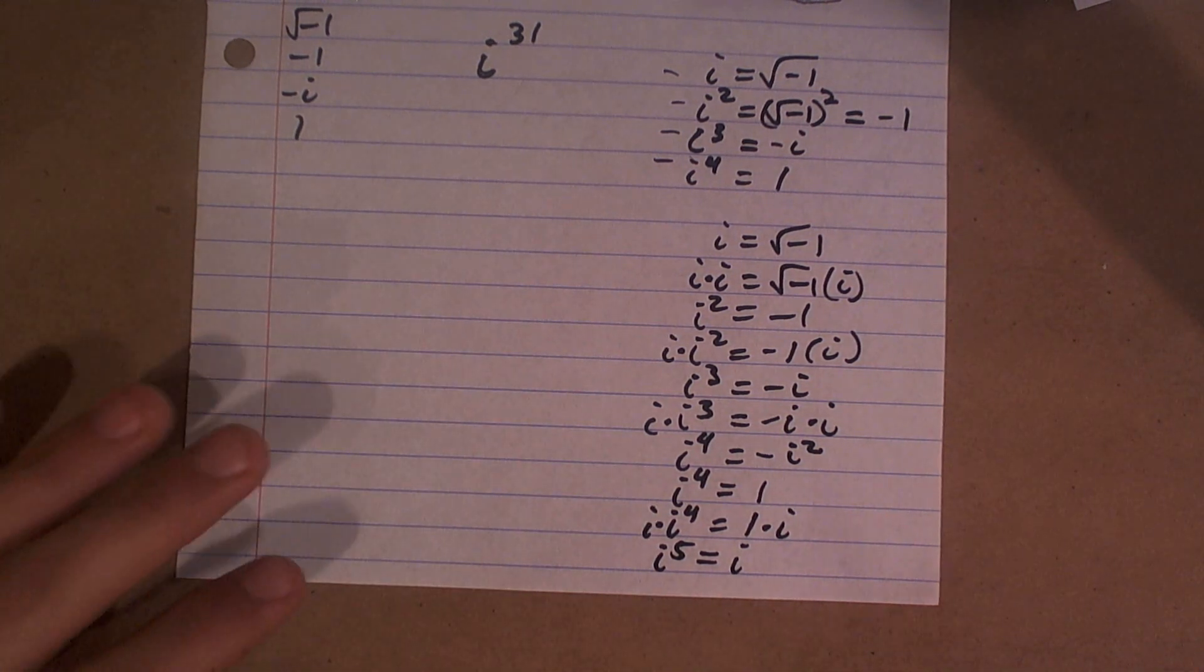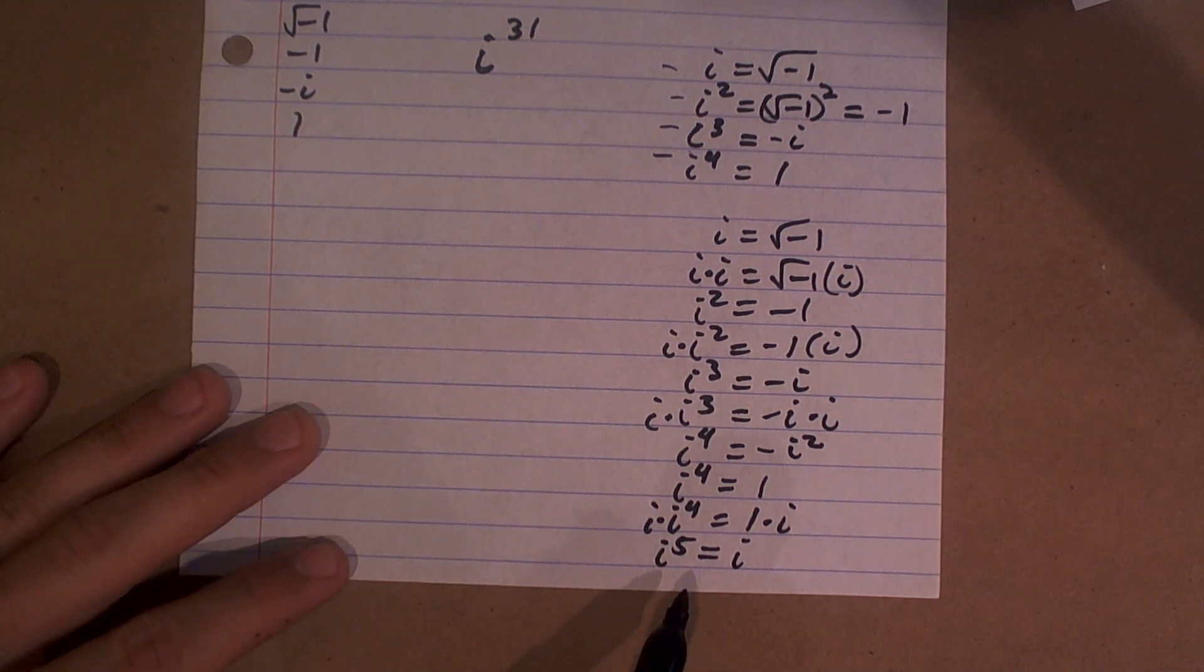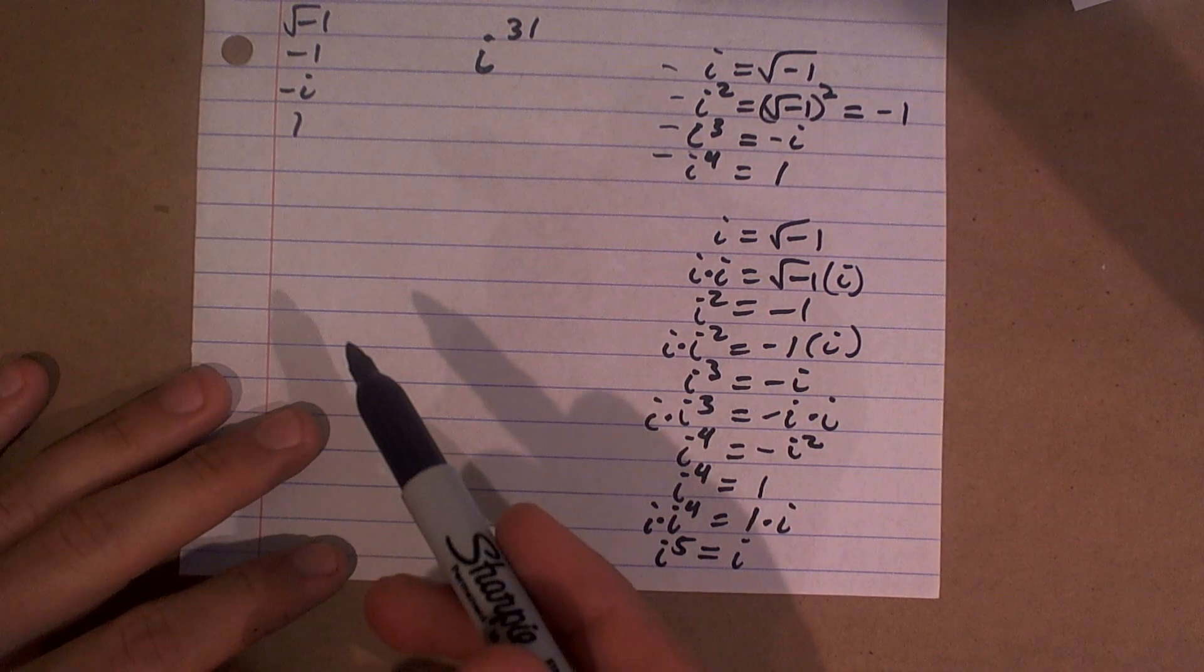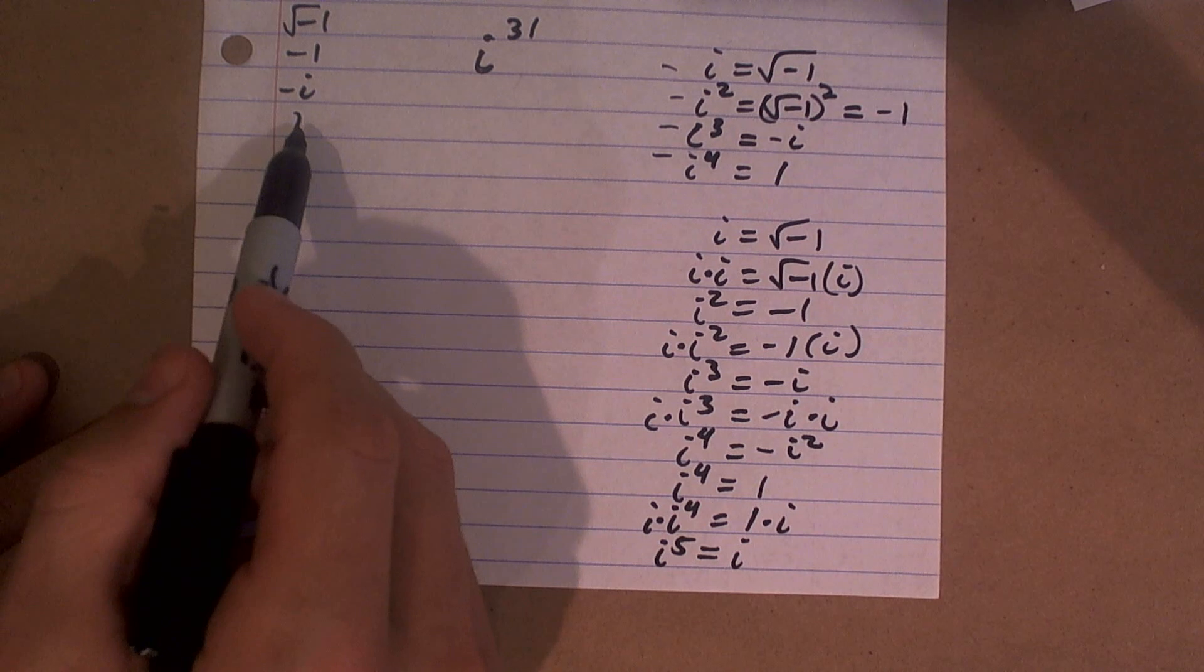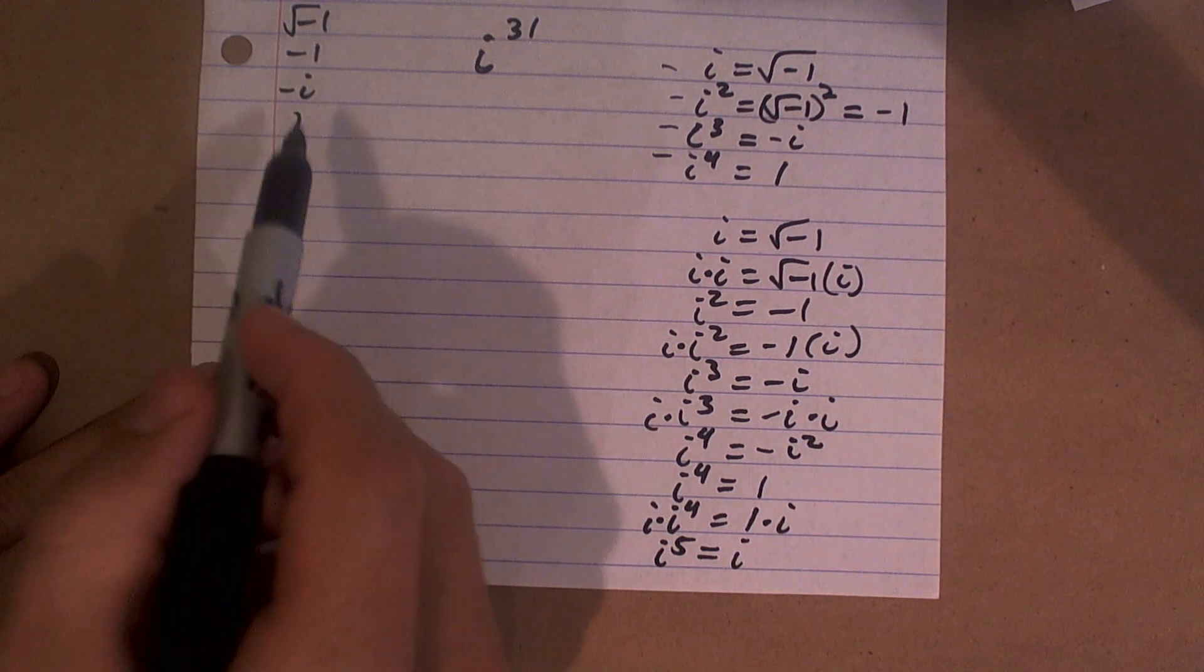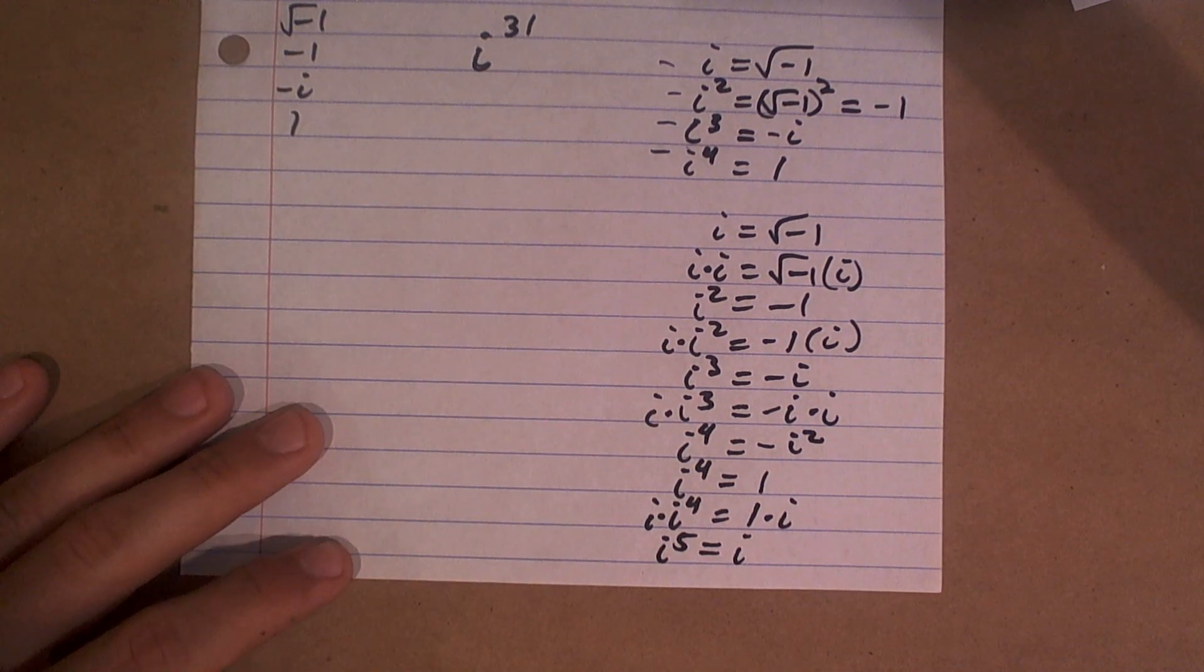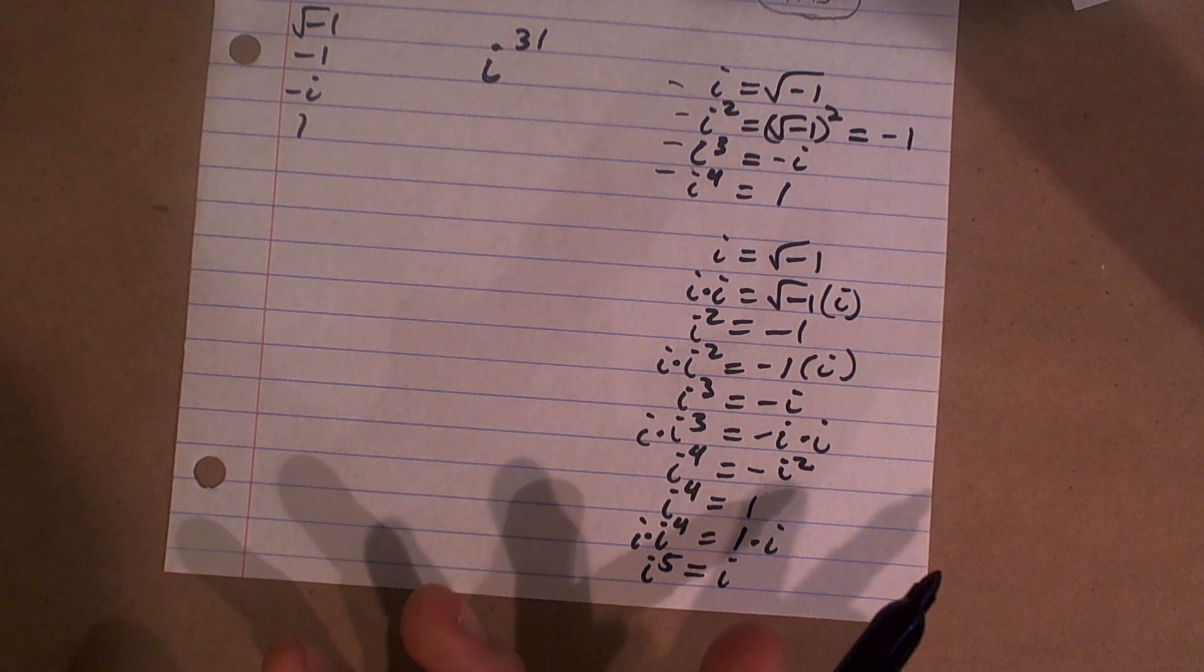So what we want to do is you can keep on going i to the sixth, i to the seventh, i to the eighth, i to the ninth, i to the tenth, and just keep on going through that. But the cool thing about this is this repeats. Once you go to the fifth, it goes 5, 6, 7, 8, 9, 10, 11, 12. Each one of those repeats what the order is.